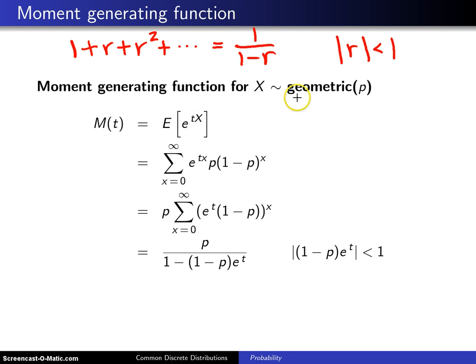Since the geometric distribution is a discrete distribution, we will have a summation rather than an integral. And furthermore, because its support goes from 0 to infinity, those will be the limits on the summation. This e to the tx gets copied right there, and we put the probability mass function right here.